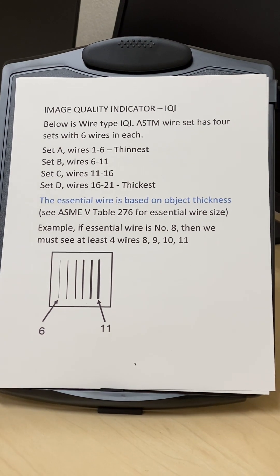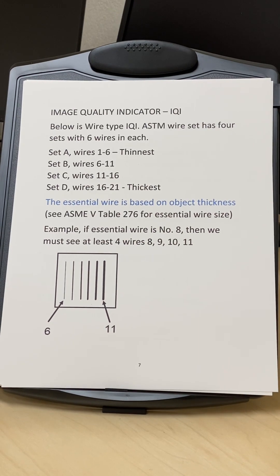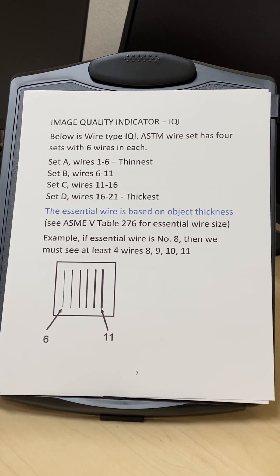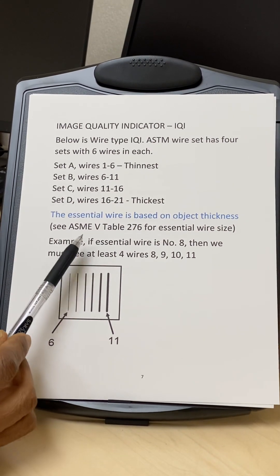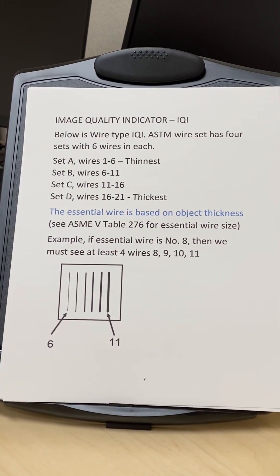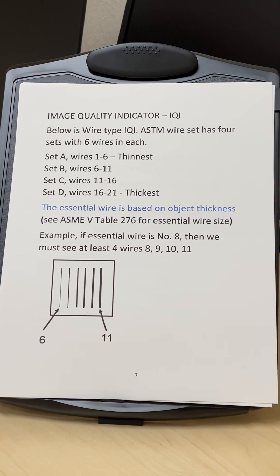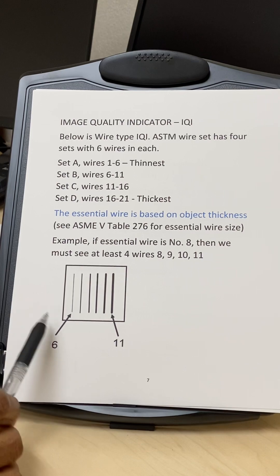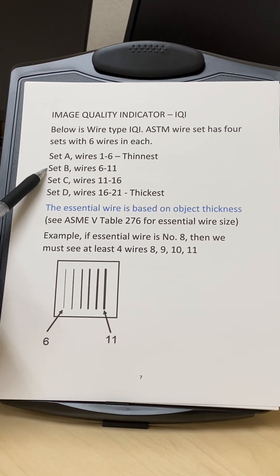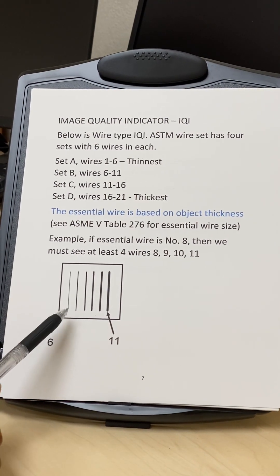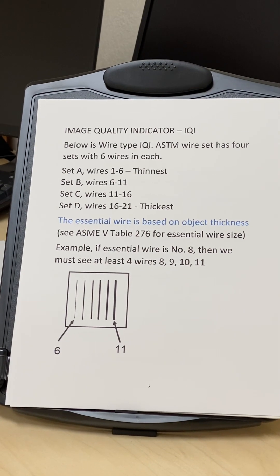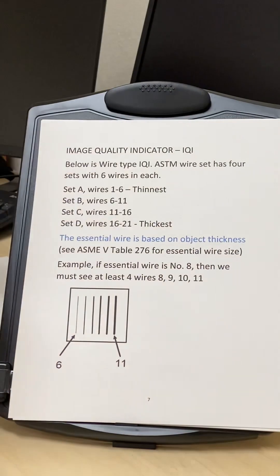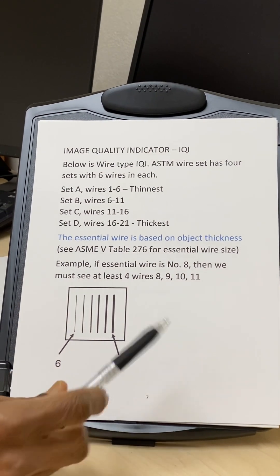When performing radiography per code, we must ensure adequate sensitivity — meaning we should be able to detect the required wire as per the code. One of the most popular codes is ASME Section 5 Article 2, which includes Table 276 listing the essential wire to be detected, placed on the source side. For example, if the essential wire is number 8, we select Set B (wires 6–11), place it on the source side, and verify that wire number 8 is visible in the shadow.